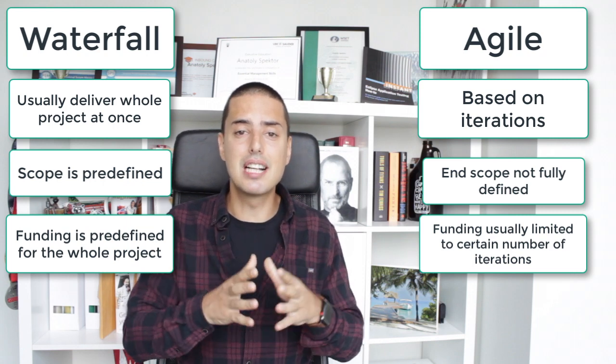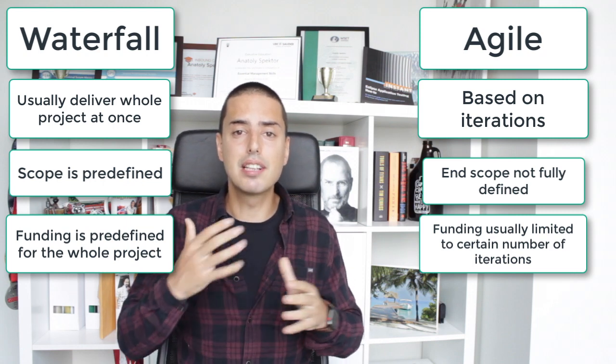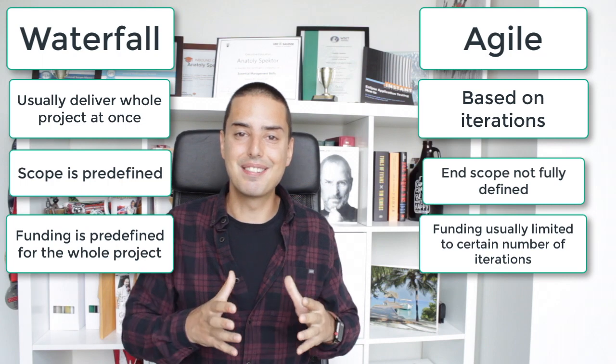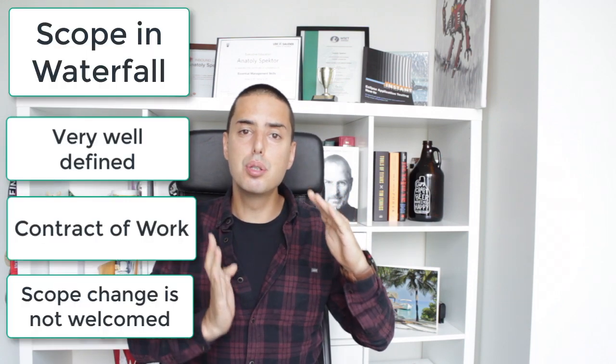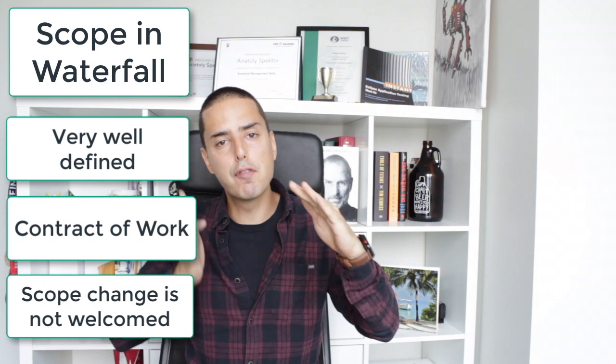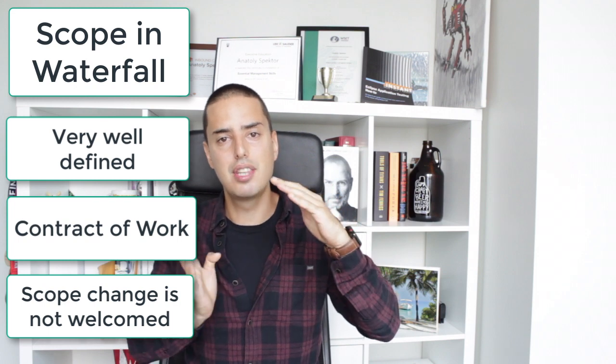Now let's go in a little bit of detail and look at different categories and how they stack up against each other. First is the scope. One difference is scope in Agile and scope in Waterfall. Scope in Waterfall is, as I said, very well defined. You have a contract of work that you need to do. You know exactly the whole scope from start to the end.